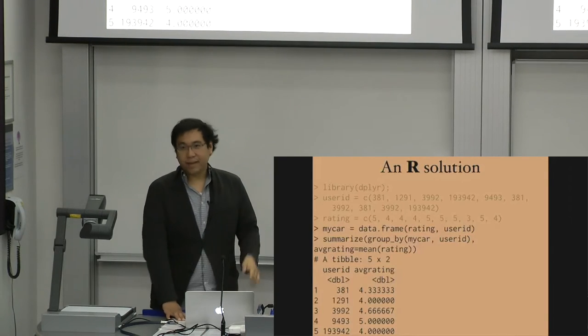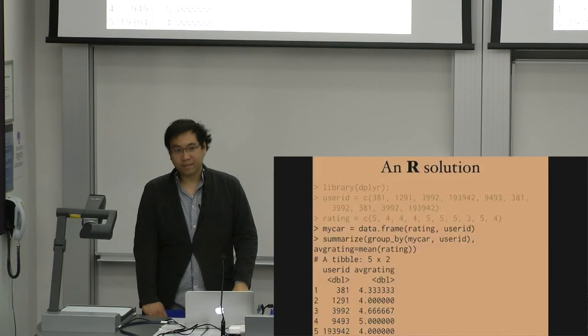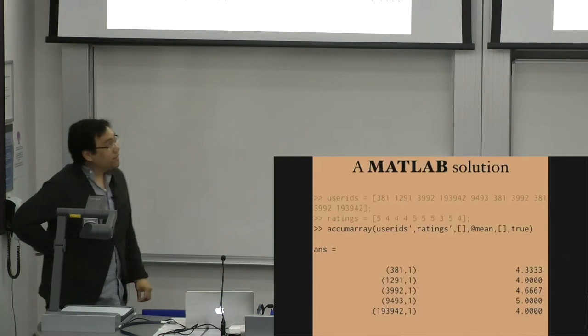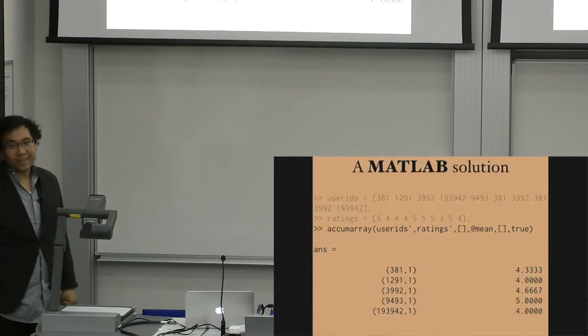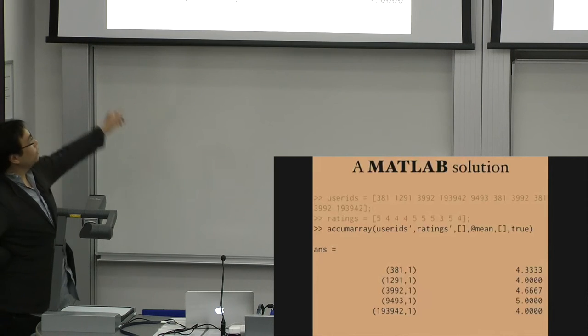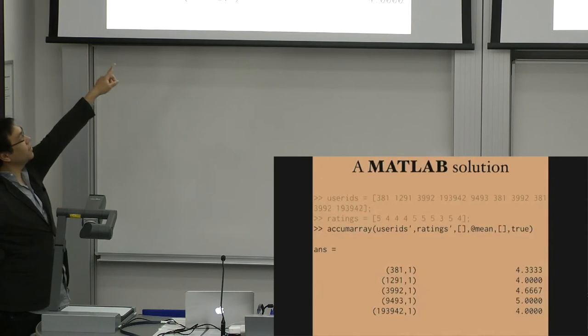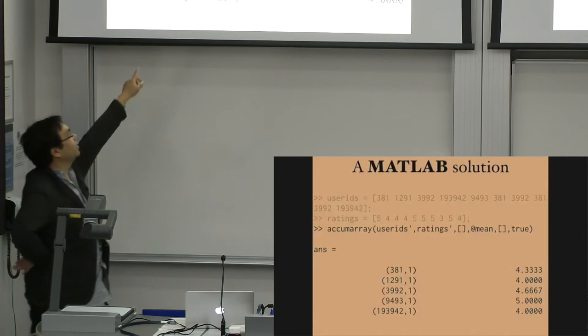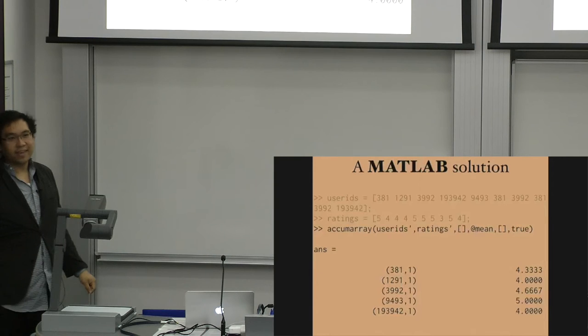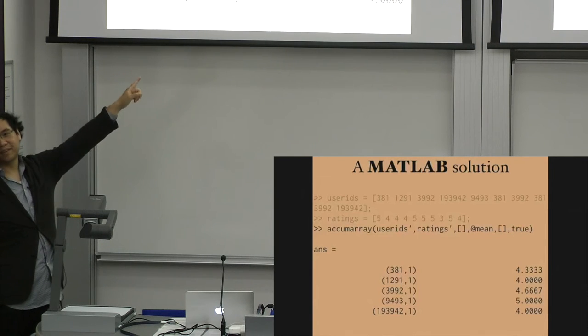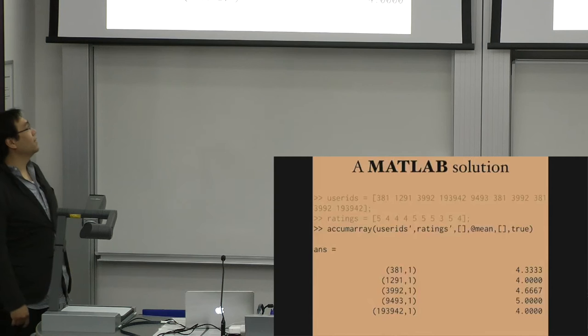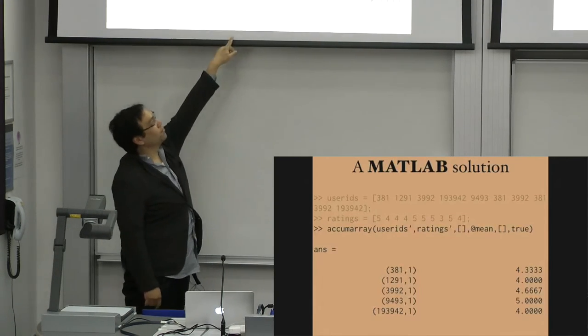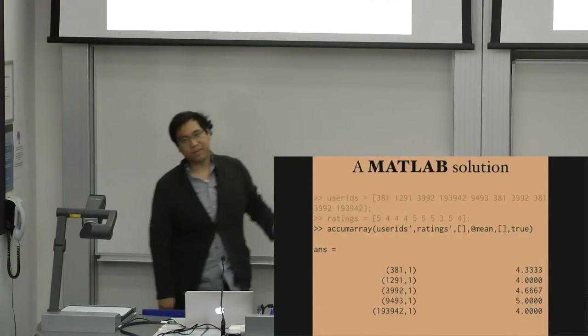And it turns out that there's a MATLAB function that does exactly this problem. The magic function that does this is accumarray. And this is how you spell this particular operation. You input these as vectors, you transpose them, and then you specify the mean function pointer. And you get this sparse matrix as the result. And if you don't pass true as the last argument to accumarray, this is not a sparse matrix. Instead, it's a dense matrix of 193,942 by 1 with most of the entries 0, and a bunch of these actually have the ratings you want.